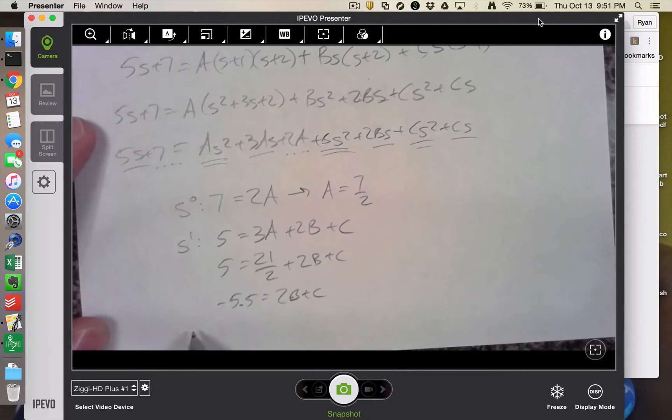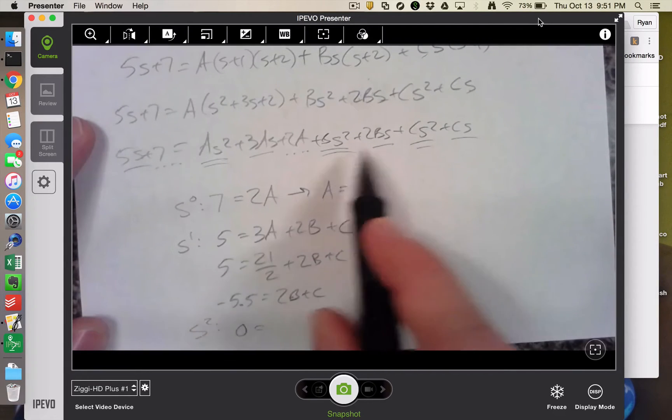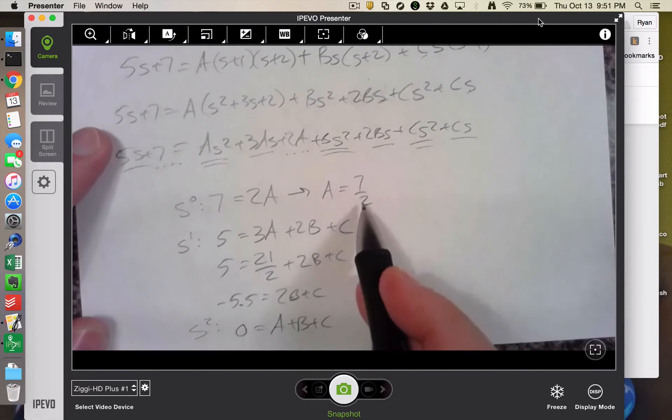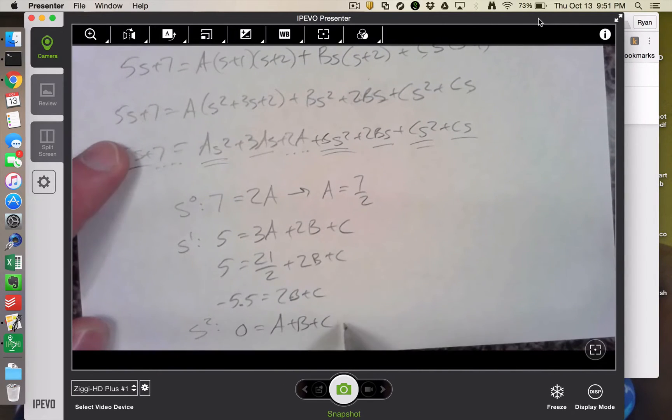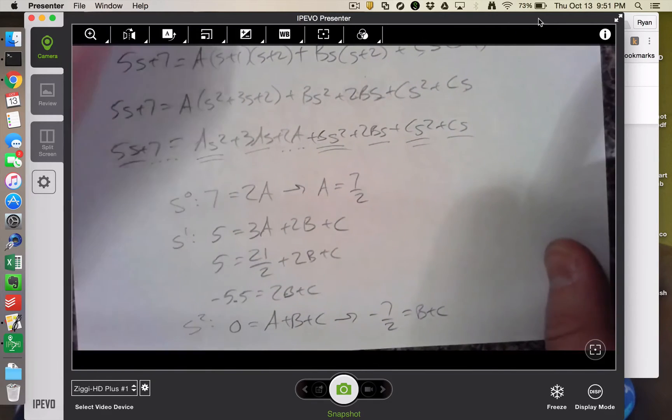And then if I took my s squared equation, I would get 0 on the left. And I'm going to get an a plus b plus c. Now we already know a. So this implies that a negative 7 halves is equal to b plus c. So I've now got two equations involving b and c.